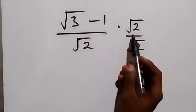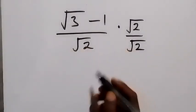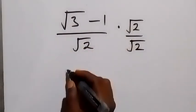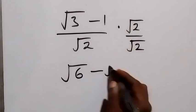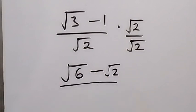Then from here, root 2 multiplies what we have here, and that's root 2 times root 3, that's root 6, minus root 2 times root 1, that's root 2. Then root 2 times root 2, and that gives us 2.